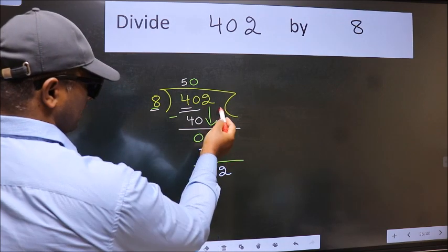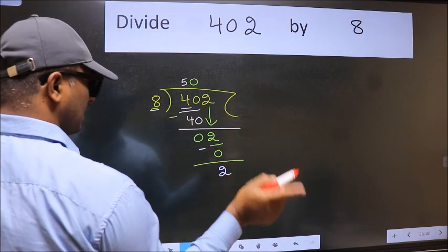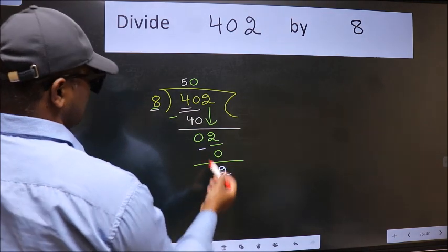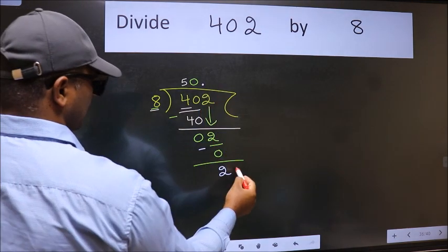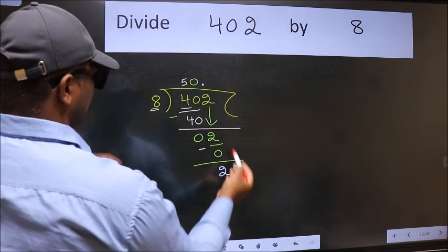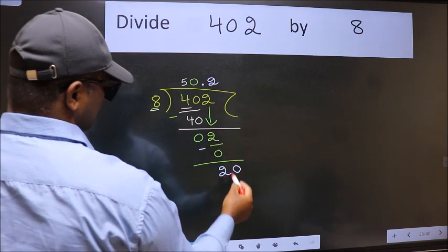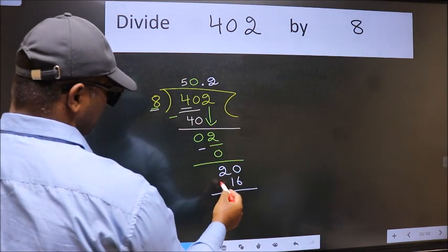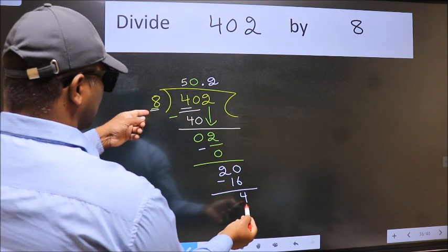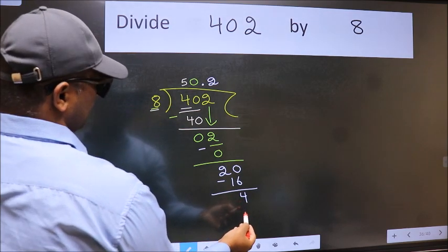Over here, we did not bring any number down. And 2 is smaller than 8. So, now we can put dot and take 0. So, 20. A number close to 20 in 8 table is 8 times 2 is 16. Now, we subtract. We get 4. 4 smaller than 8. And we already have the decimal.